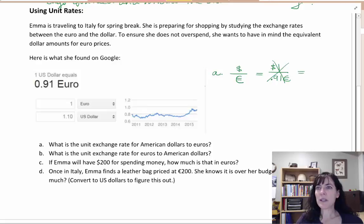I would want to use this other one, which is written here, which is one euro. That's great, because that's my denominator - I want that to be one.